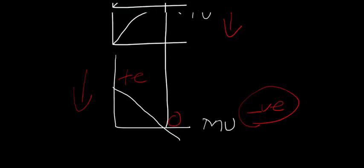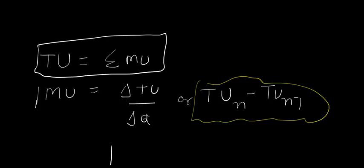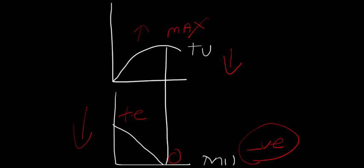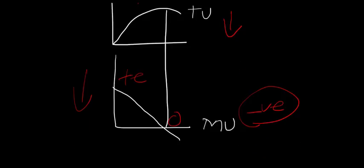Even in terms of graphical representation, marginal utility behaves in the same way — marginal utility is nothing but the slope of the total utility curve. This was the relationship between total utility and marginal utility. Now, for the law of diminishing marginal utility — the law is based upon the same relationship but has certain assumptions. To understand that, we would request you to watch our next video, which talks about the law of diminishing marginal utility separately. Thank you.